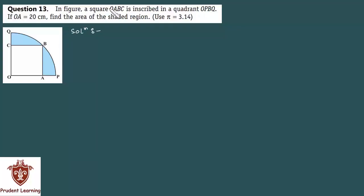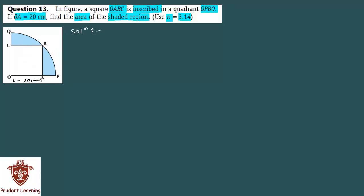In the figure, a square OABC is inscribed in a quadrant OPBQ. If OA is 20 cm, find the area of the shaded region. Pi की value आपको 3.14 use करनी है. इस question में आपके पास एक square OABC है जिसको quadrant OPBQ पे inscribe किया गया है. OA का length आपको given है 20 cm, और इतनी information से आपको shaded region का area find करना है.